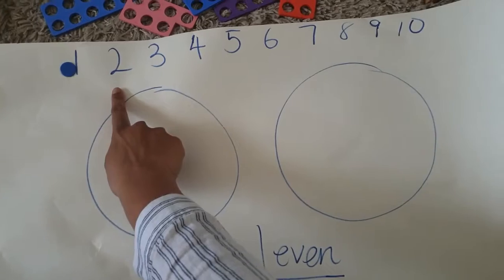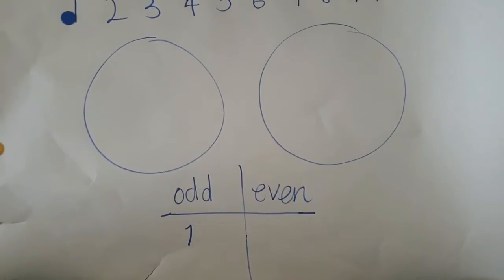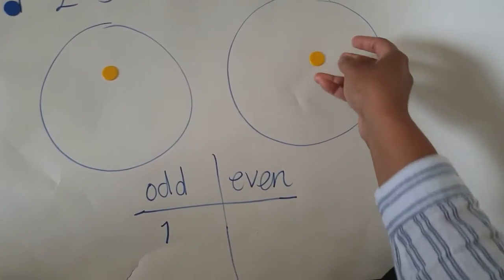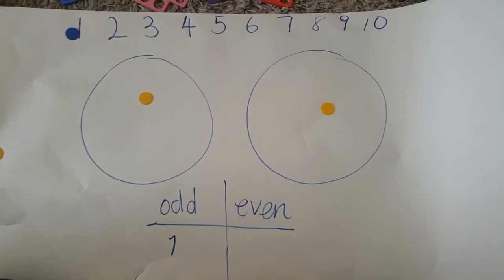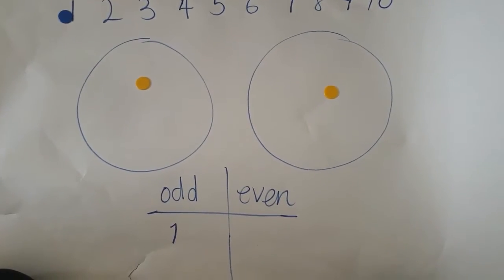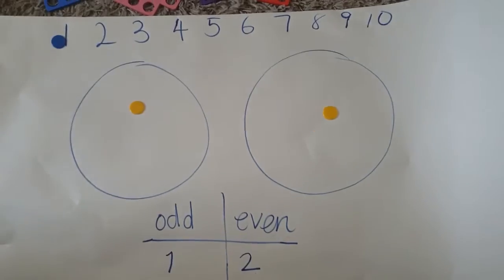Right, let's remove number one. Now, two. Let's share two into the two groups. Ready? One, two. Is it the same on each group? Yes. So therefore, two is an even number.